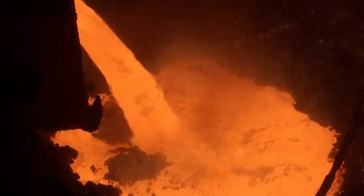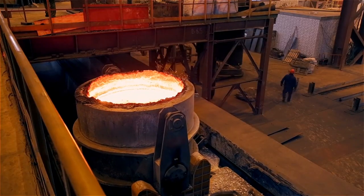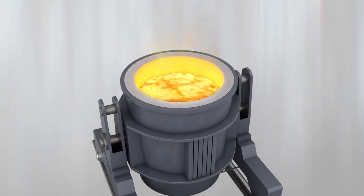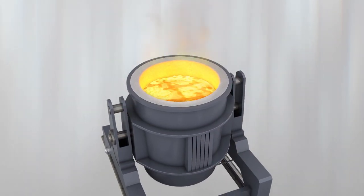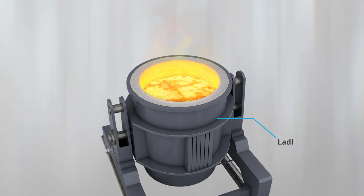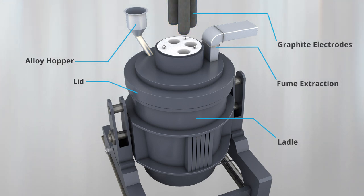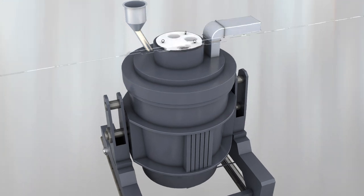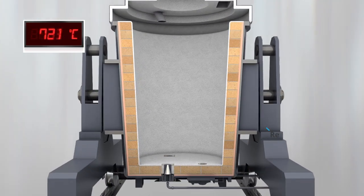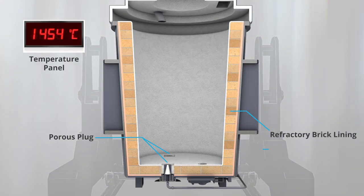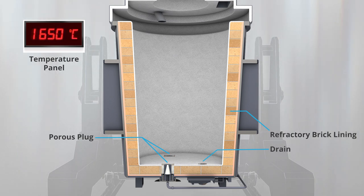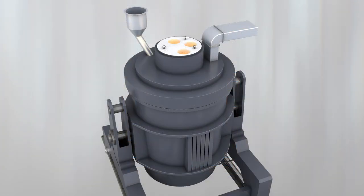Following primary steelmaking, molten steel is usually tapped into ladles, which are in effect very sophisticated and robust containers capable of holding up to 300 tons of liquid steel. It is in these ladles that various key alloying additions are made, and the overall process is referred to as secondary steelmaking. The ladles must therefore be capable of containing the liquid steel at a temperature between 1600 and 1650 degrees centigrade during several lengthy procedures.